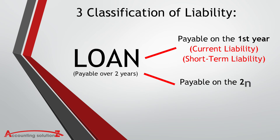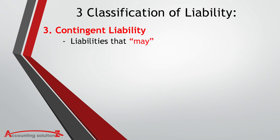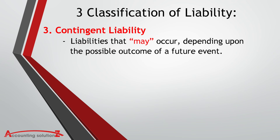Last is the Contingent Liability, a special category of liability. It refers to those liabilities that may occur depending upon the possible outcome of a future event. Therefore, Contingent Liabilities are potential liabilities. Best examples are Lawsuit Payable and Warranty Payable.